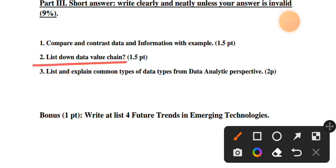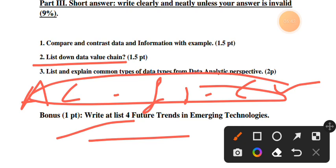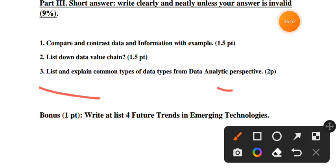The data value chain includes acquisition, filtration, and curation stages. Number two asks to list down data value chain. Number three asks to explain common types of data types from data analytic perspective - this includes metadata and other data types which have been introduced and explained.